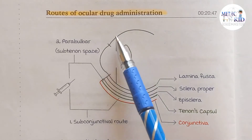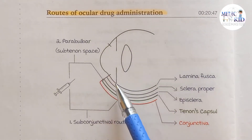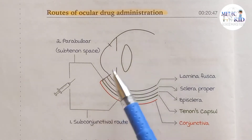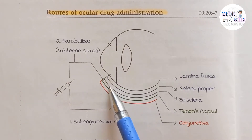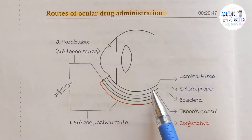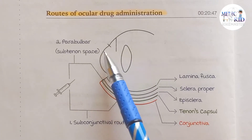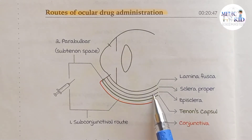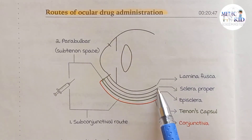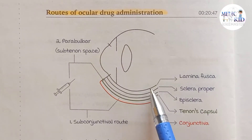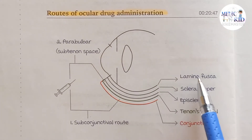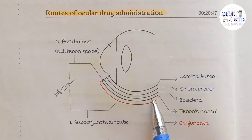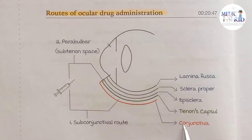The outermost layer of the eye is the outer layer, divided into three parts: the cornea, the sclera, and the junction between the sclera and the cornea, which is the limbus. The sclera has three layers: the outermost layer is the episclera, the middle layer is the sclera proper, and the innermost layer is the lamina fusca. Above the episclera is Tenon's capsule, shown as a green line, and above Tenon's capsule is the conjunctival layer.